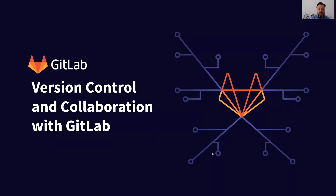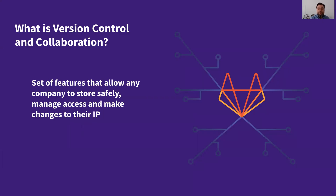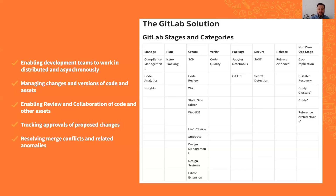Hello and welcome to this short video about what is version control and collaboration and why it is important. The short definition of version control and collaboration is that it is a set of features that allow any company to store safely, manage access, and make changes to their IP. In the case of GitLab, that comprises a set of categories that most of them fall into the create stage.